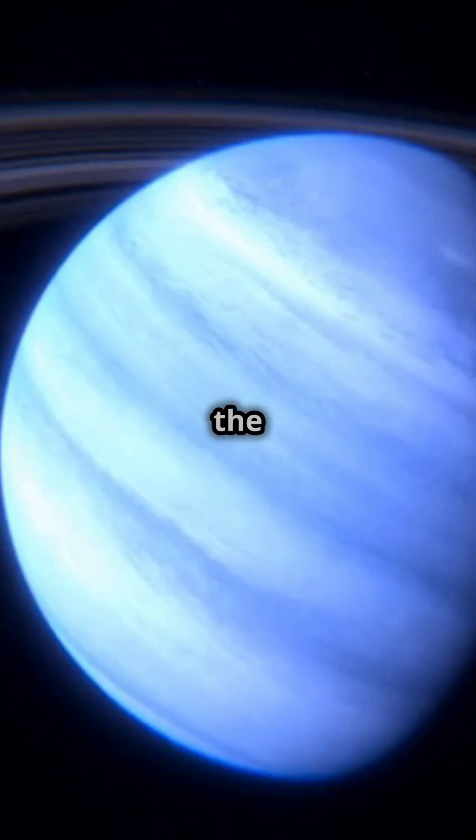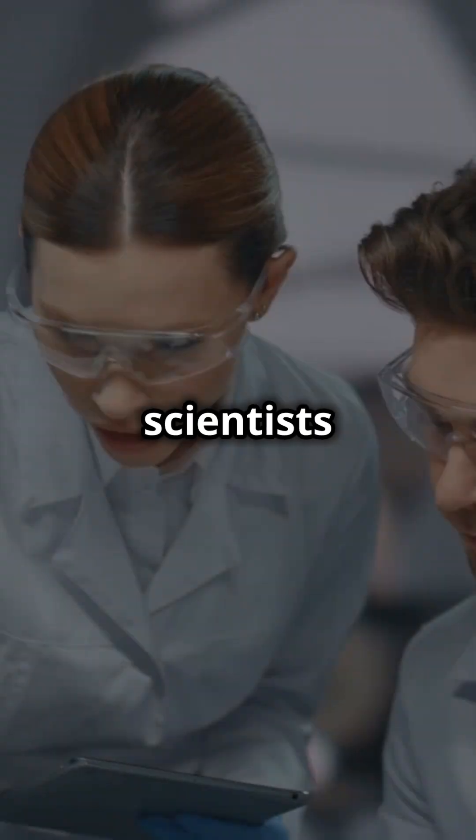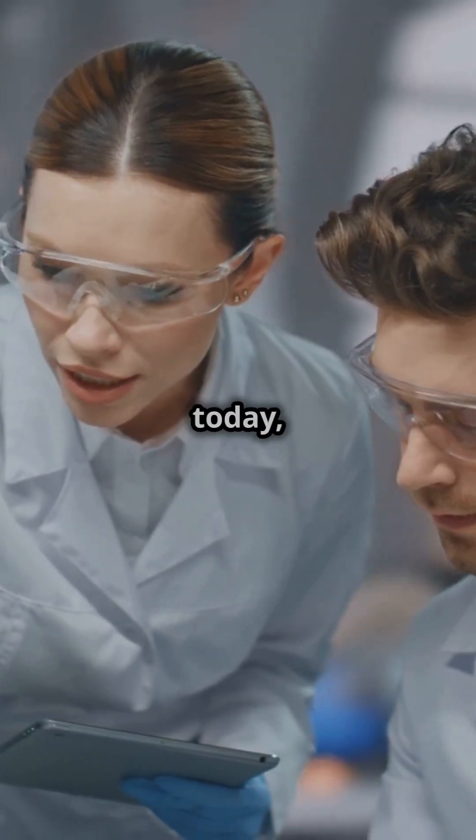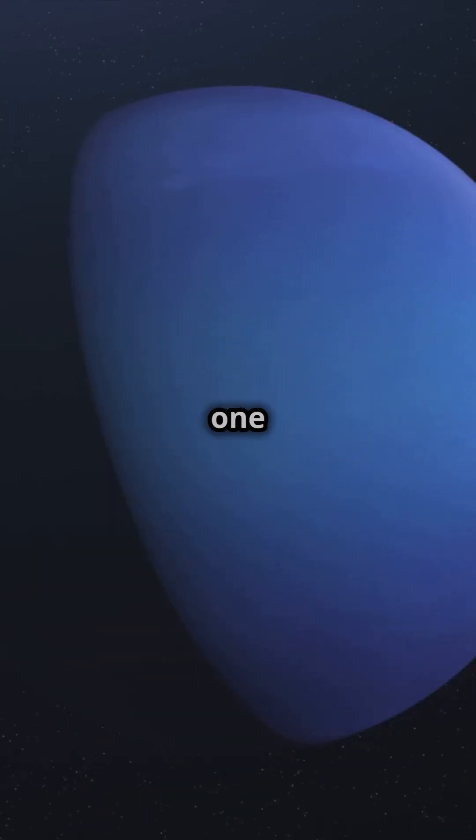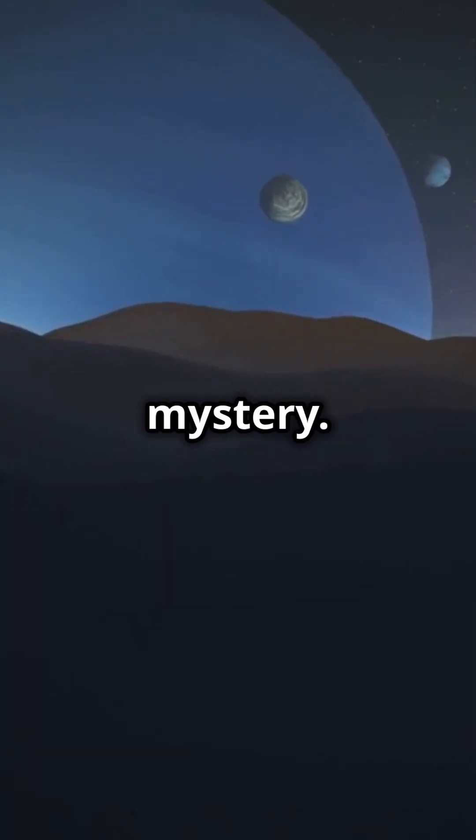Neptune and Uranus, two of the most fascinating and mysterious planets in our solar system, have baffled scientists for years. And today we're finally starting to unravel one of their greatest secrets, something known as the magnetic mystery.